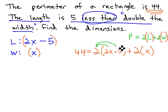Whenever we have parentheses, we start by distributing through the parentheses. 44 equals 4x minus 10, plus 2x.